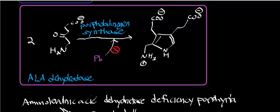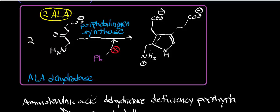Welcome back to the playlist on heme biosynthesis. In the last video, we looked at the reaction of delta-aminolevulinic acid synthase — this molecule here, which we abbreviated ALA. We synthesized that inside the mitochondria, and now we're going to transport the delta-aminolevulinic acid out into the cytosol of the cell making heme, and condense two molecules of ALA into one molecule of porphobilinogen.